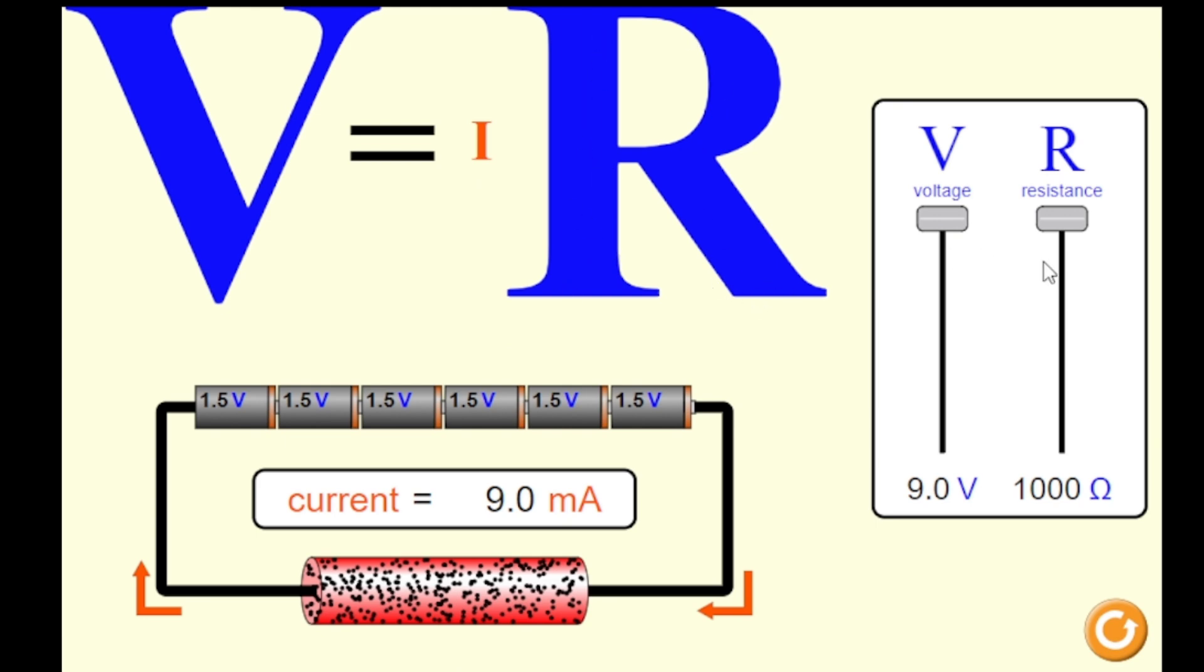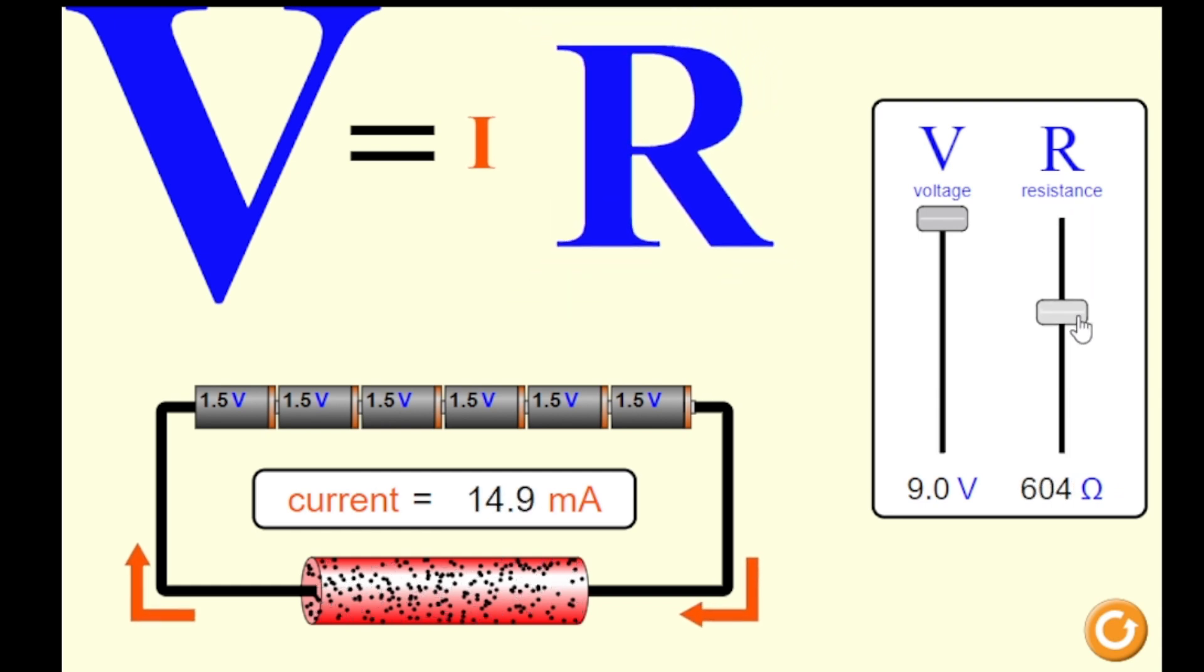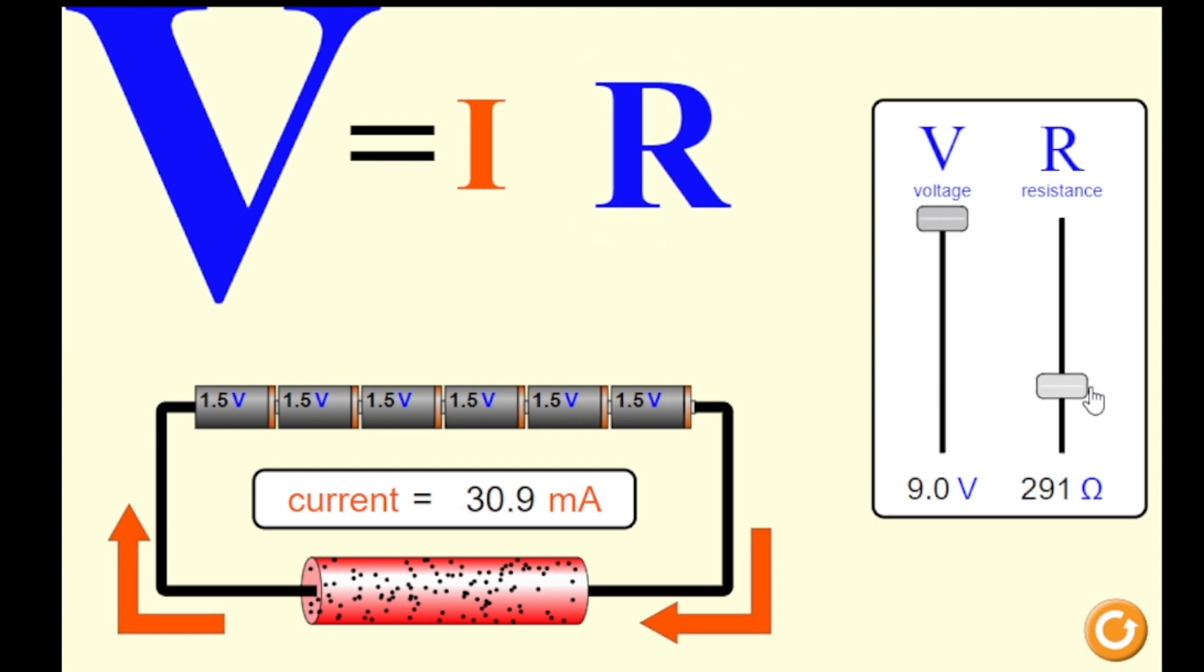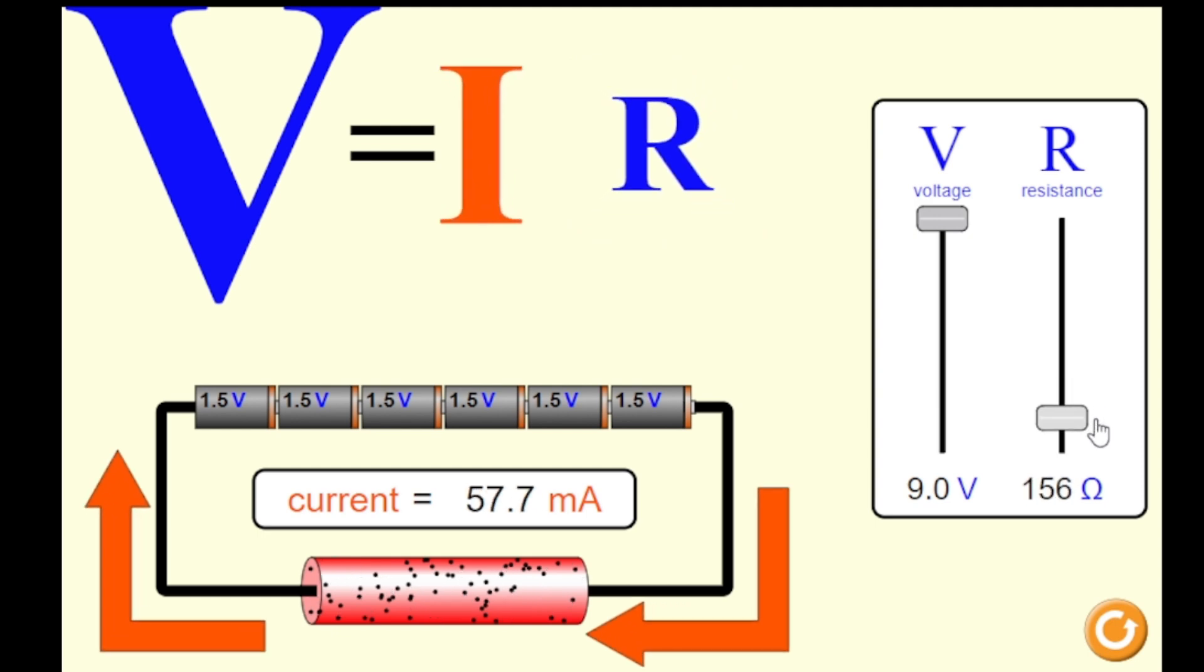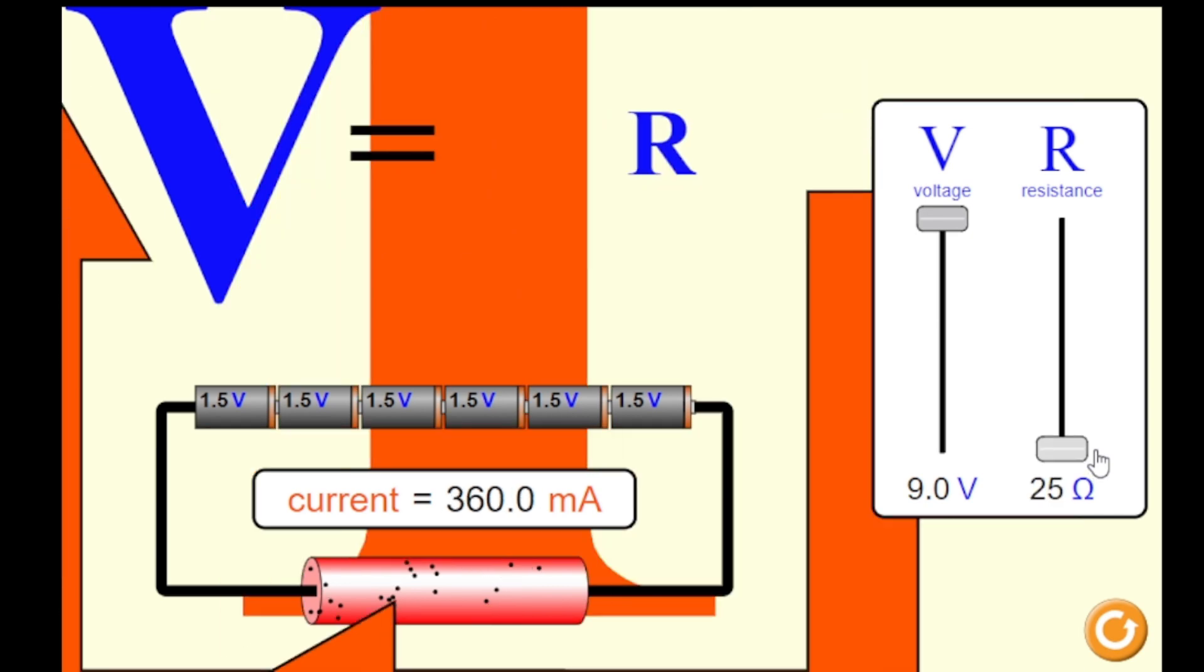If we reduce the value of our resistance, what do you observe? The electron flow is going faster. You can see the electron flow is going faster and the value of your current increases.